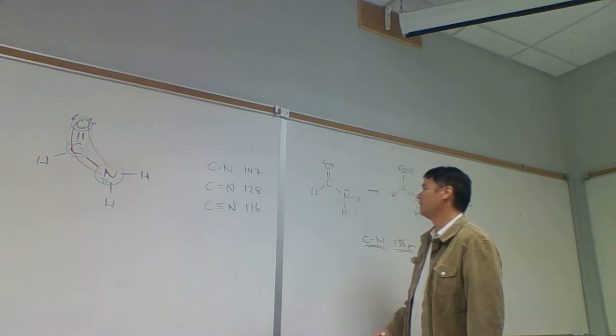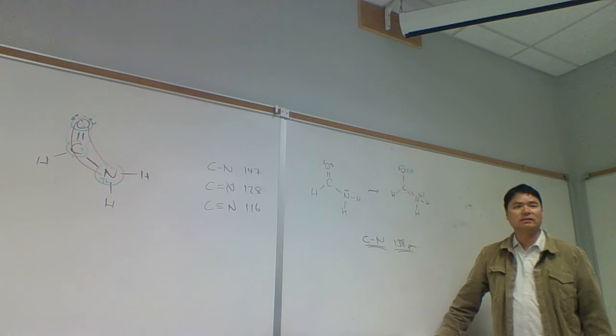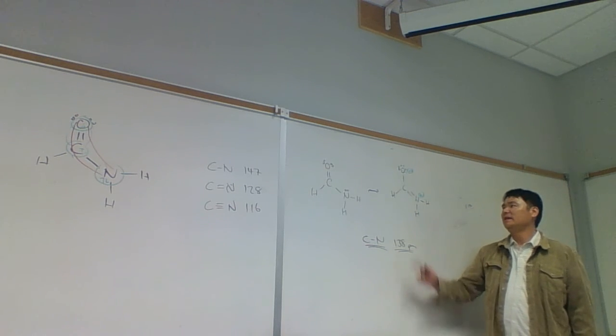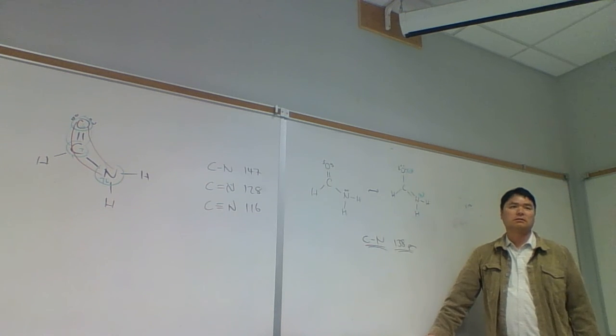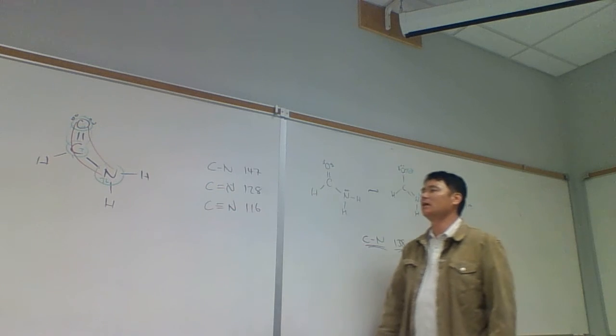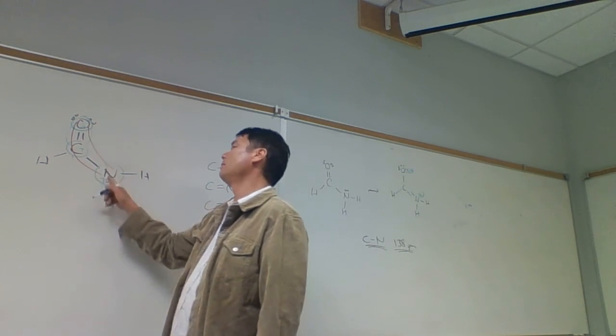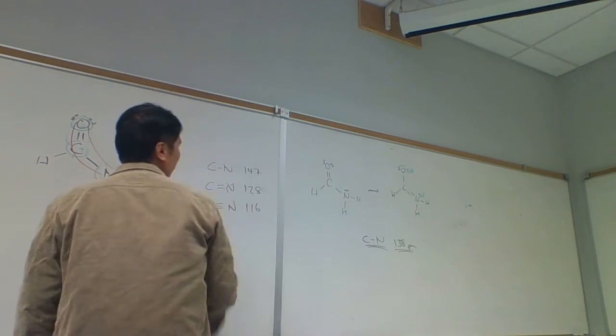Like a bond order of like, say, 1.5. So, what that means is a... That means that the actual structure is a hybrid structure of these two. That's what we have. And we have... So, the hybrid structure is going to look like this, where we delocalize the pi bonding.